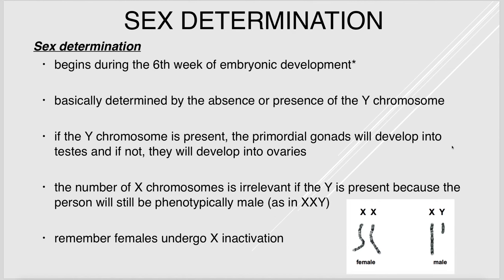Sex determination begins around the sixth week of embryonic development and is dictated by the presence or absence of the Y chromosome. The primordial gonads develop into testes if the Y chromosome is present; without it, they become ovaries. The number of X chromosomes is irrelevant if Y is present — that individual is considered male both genotypically and phenotypically. Females undergo X inactivation.